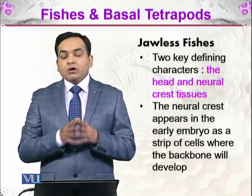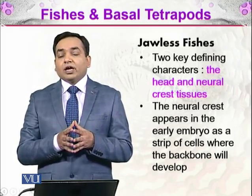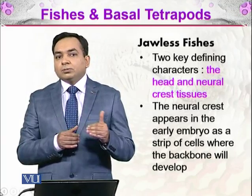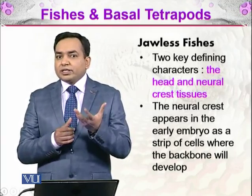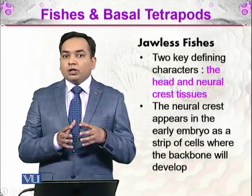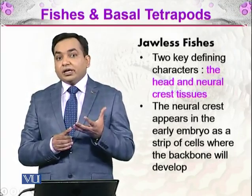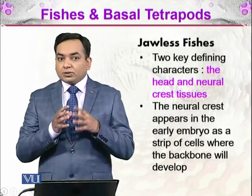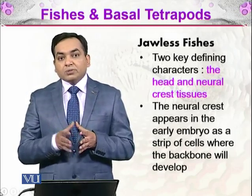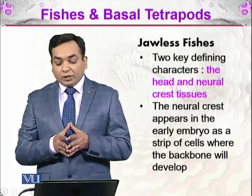In vertebrates, the head is the most pronounced feature — all vertebrates have a head. For other animals such as snails, we just call their anterior part the head, but they don't have a cranium. We also call vertebrates craniates. The cranium is a structure which protects the brain, and all vertebrate animals have this cranium.